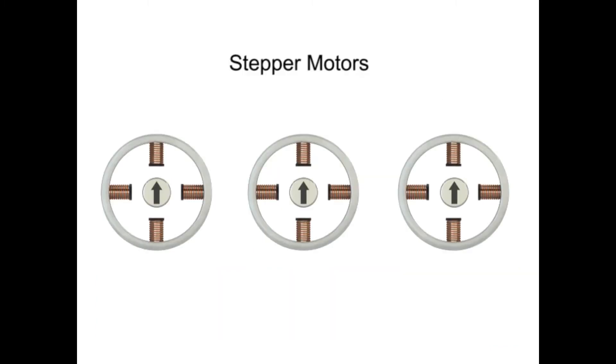Stepper motors have three step modes of operation that include full, half, and micro-stepping. The type of step mode output of any stepper motor is dependent on the design of the driver. The driver also controls both the step angle and speed of the motor by switching the field coils in a set sequence.